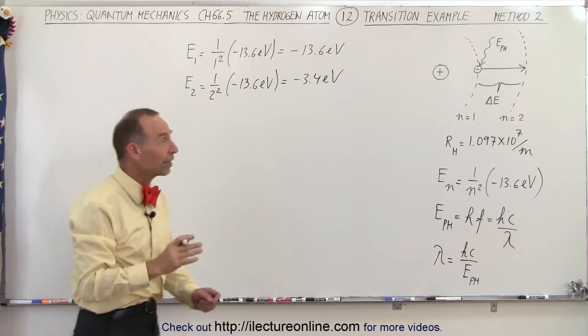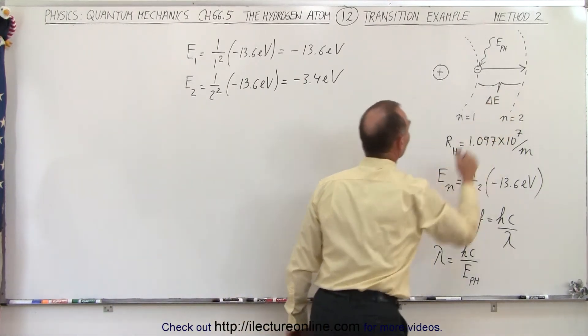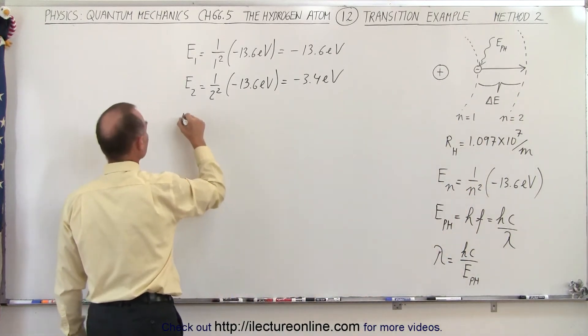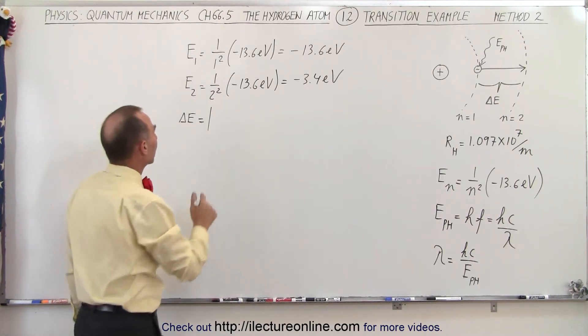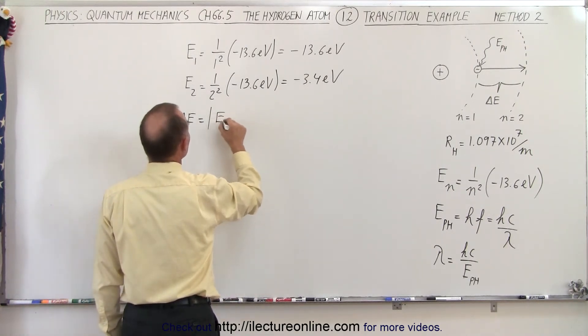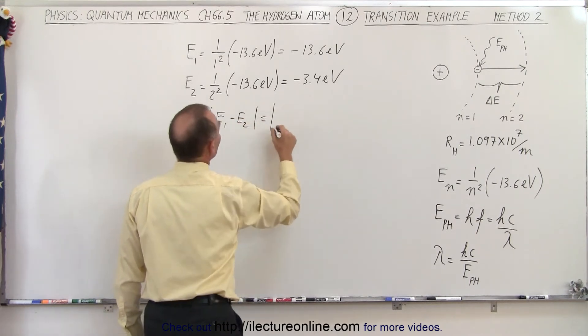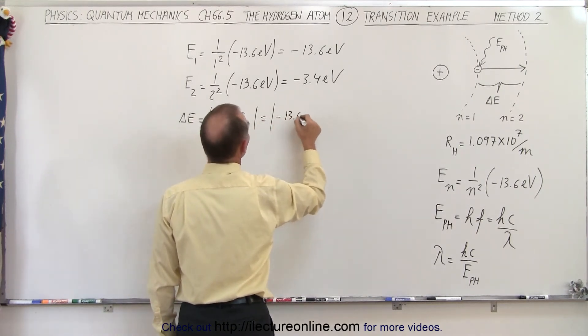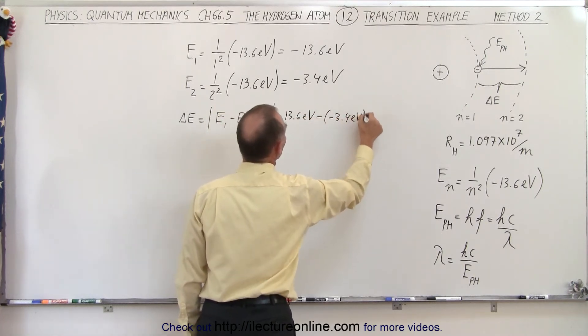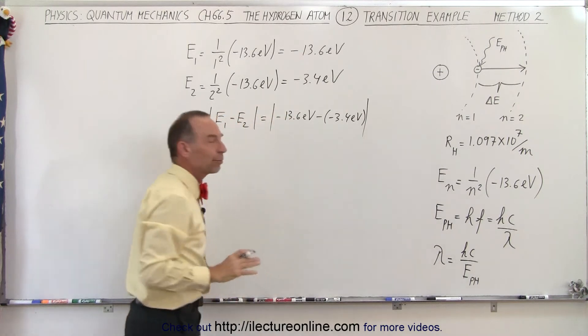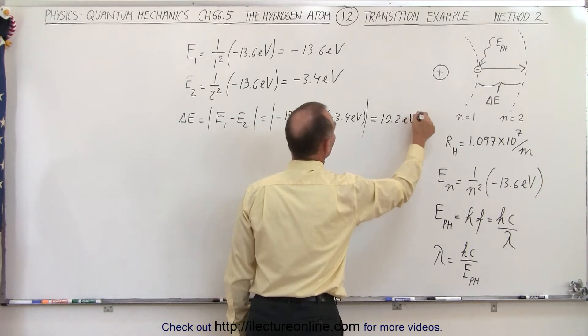So the first thing we did was calculate the energy of the two levels. Now we're going to calculate the difference of the energy. So delta E is going to be equal to, and we only care about the absolute value of that, so we're going to subtract one from the other, E1 minus E2. So in this case, that's equal to minus 13.6 electron volts minus minus 3.4 electron volts, and we only want the absolute value of that, which ends up being 10.2 electron volts.